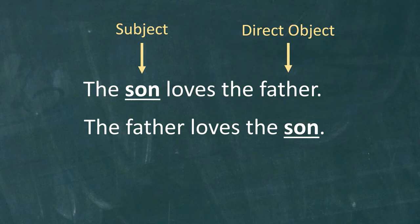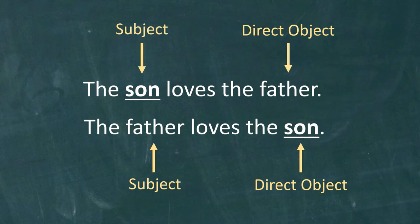In the second sentence, father is the subject and son is the direct object. Note that in each sentence, the words are spelled the same way. The word son is spelled S-O-N when it is the subject and S-O-N when it is the direct object. Likewise, the word father is spelled the same regardless of whether it is functioning as the subject or the direct object.